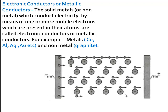In this picture, electrons from the valence shell come out and move freely inside the metal. Because of this, electricity is easily conducted through these electrons from the negative pole to the positive pole. The presence of free electrons is why metals can conduct electricity and are known as electronic conductors.